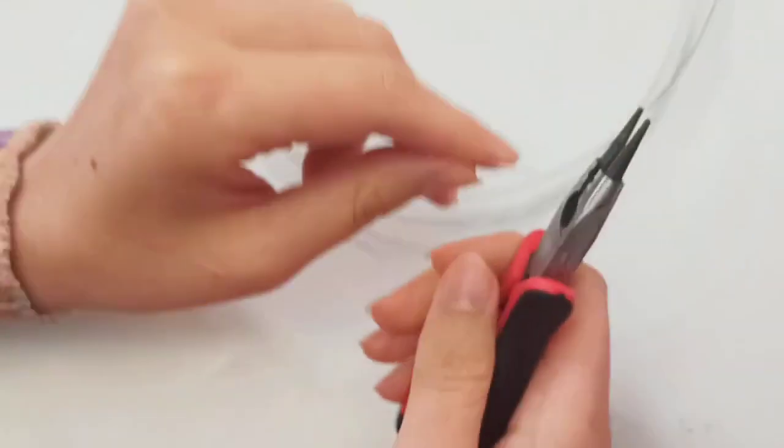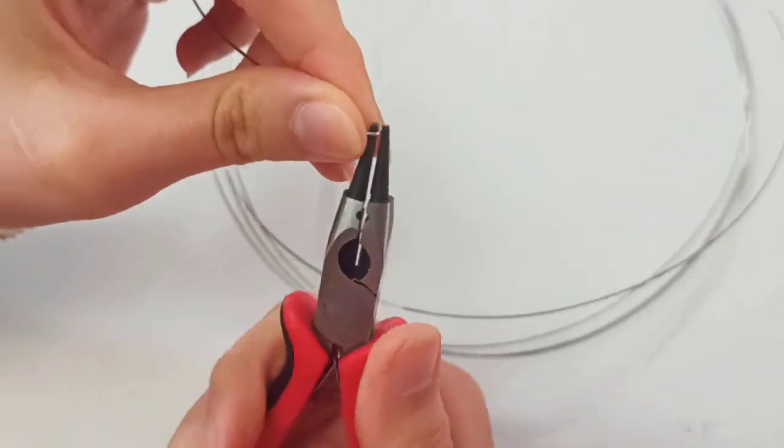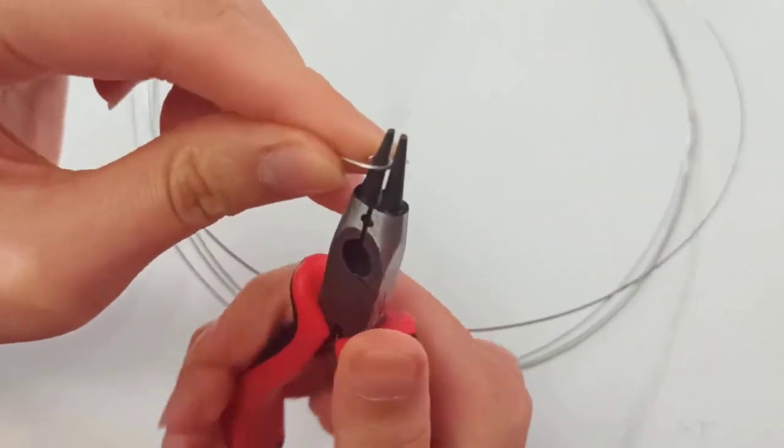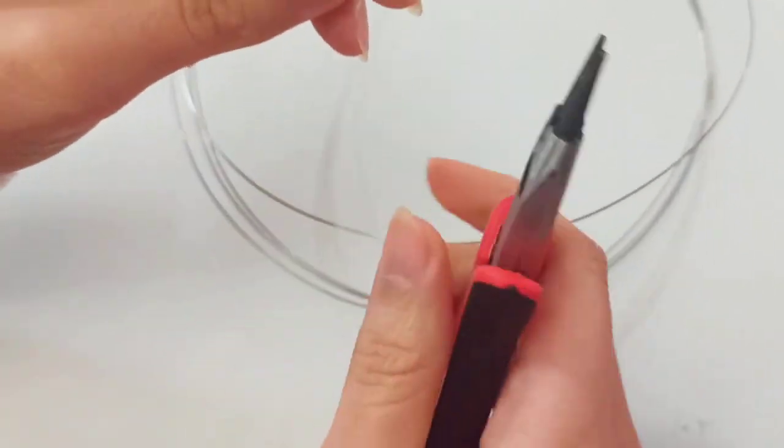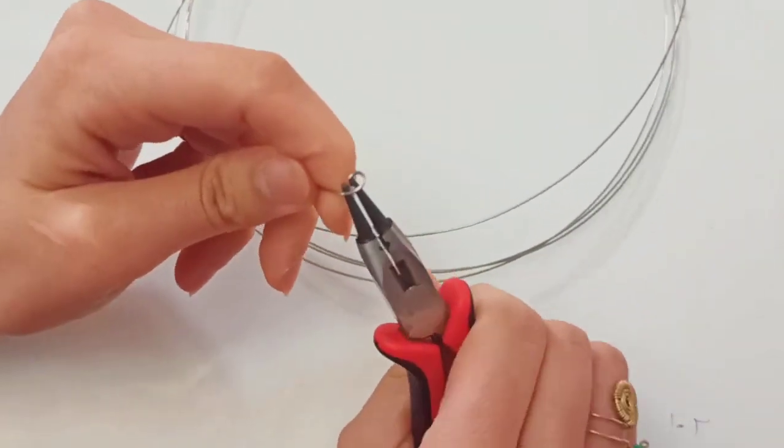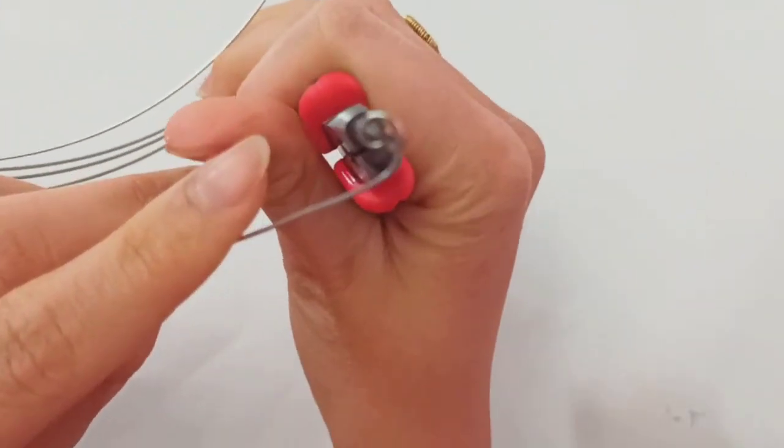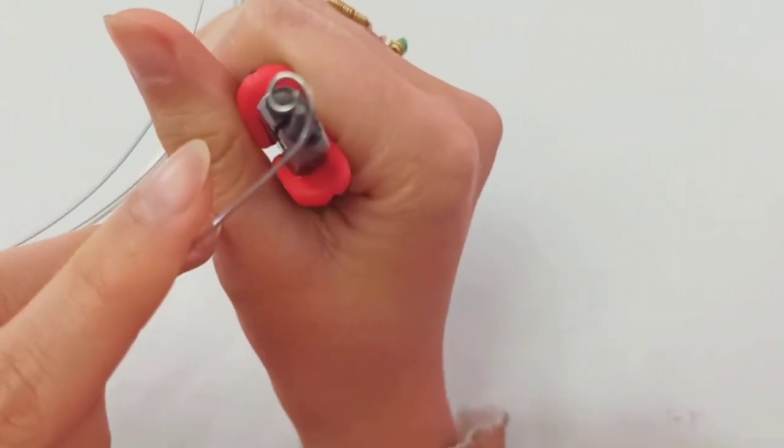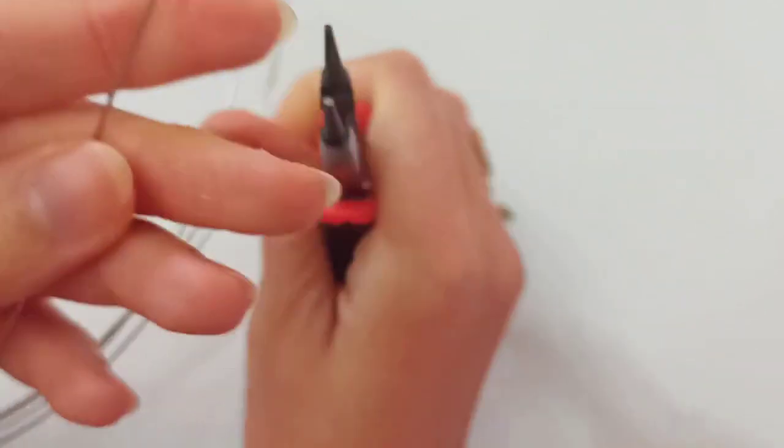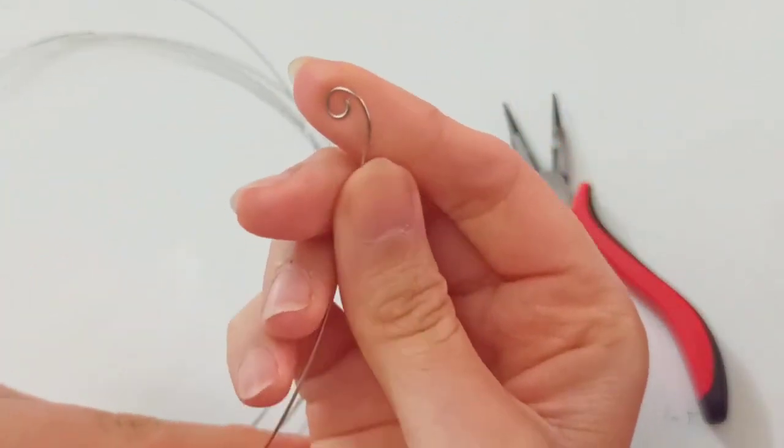Make a little loop with your round nose pliers. It could be any other materials that you desire and is your preference. It's just like this, something like a P-shape. In this manner, it's more like a Q.